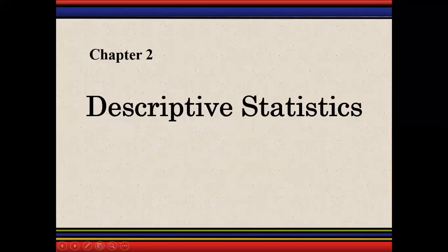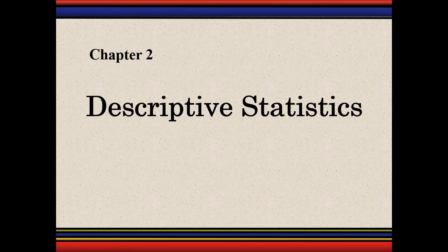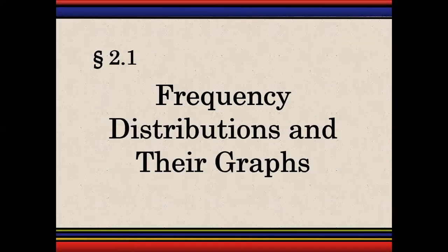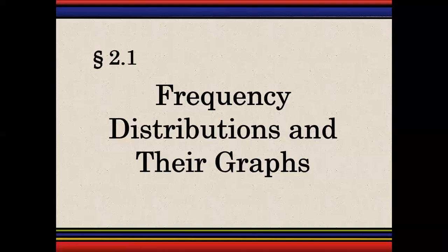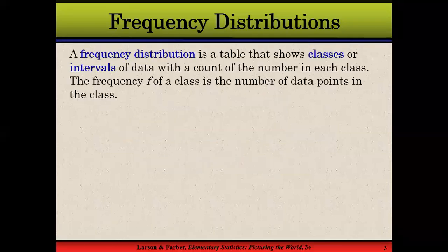We start chapter number two, which is about descriptive statistics. As discussed earlier in chapter one, there are two categories of statistics: number one is descriptive statistics, where we describe the data, and number two is inferential statistics. In chapter two, we cover most of the areas under descriptive statistics. The very first section is about frequency distributions and their graphs.